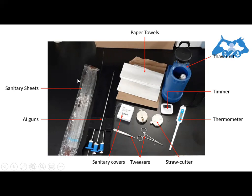Now I will show the different components and equipment used while performing artificial insemination. These include a paper towel, a timer, a thermometer, a straw cutter, sanitary covers, an AI gun, and sanitary sheets. All these items should be available when doing artificial insemination, especially if you are doing it yourself or have a trained person at your dairy farm.